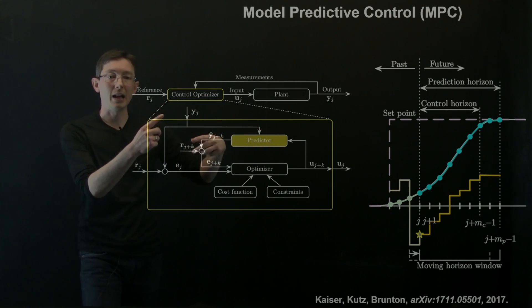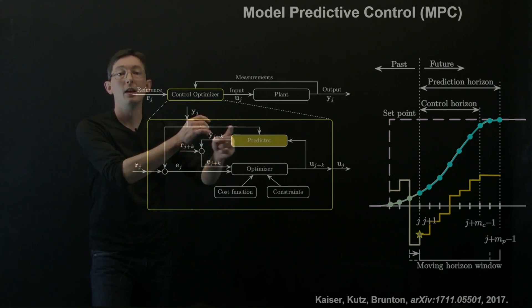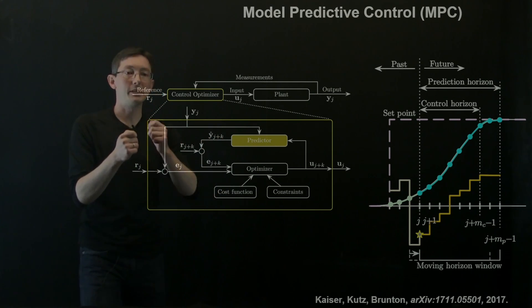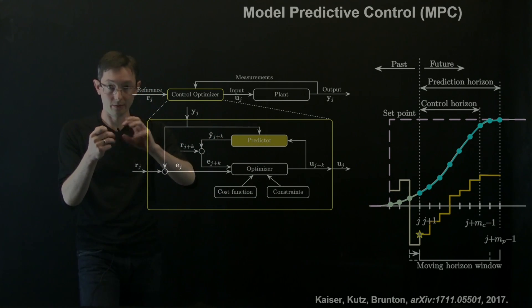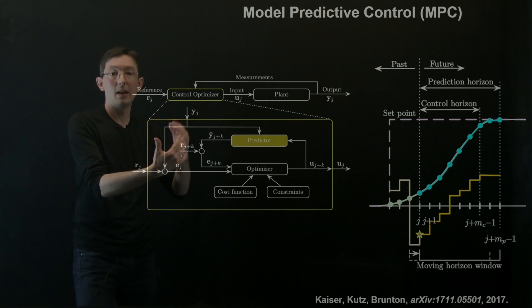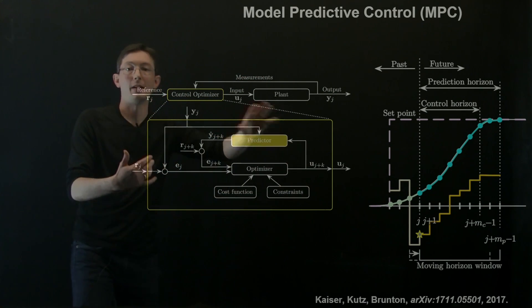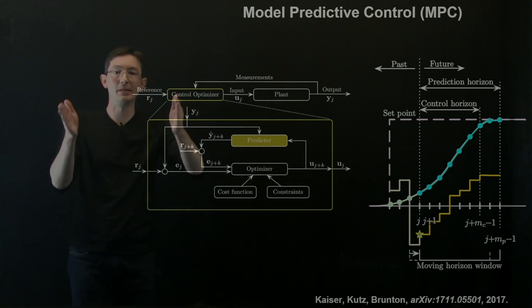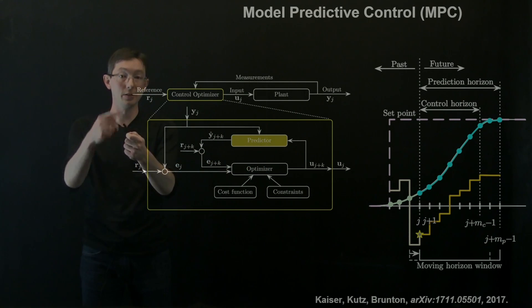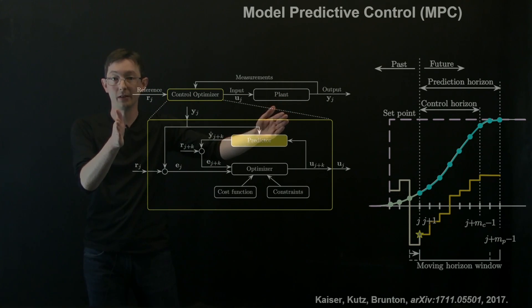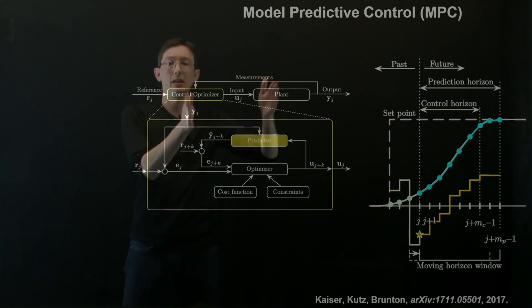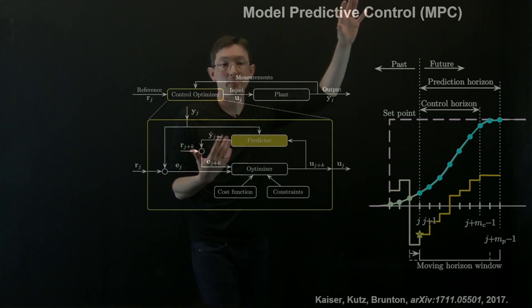At every time step, you use this model to optimize your control input over some short time window, and then you use that control input — that first value of your optimizing control signal — you enact that, you see where your system goes, and then at the next time step you rerun an optimization. So for every time step you're running an optimization into the future based on your model, picking the first actuation signal and using it, then you reinitialize your optimizer, pick the next first actuation signal, and you keep walking forward in time. That's essentially what model predictive control is doing.